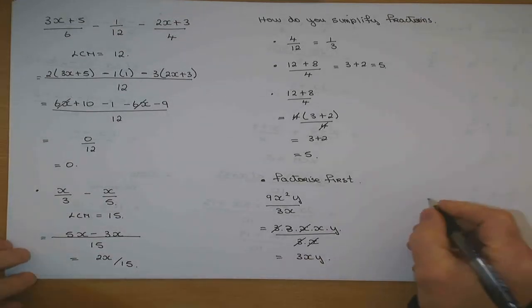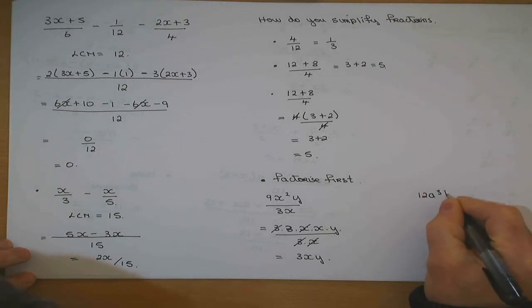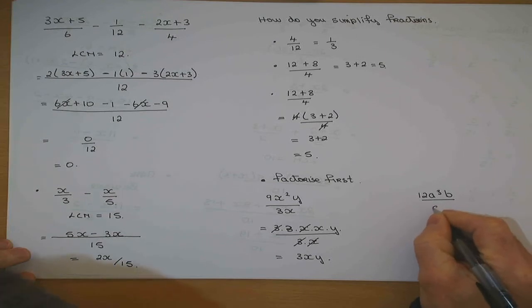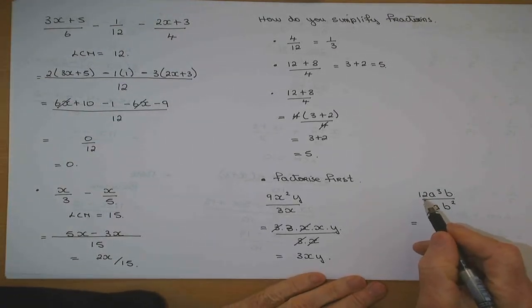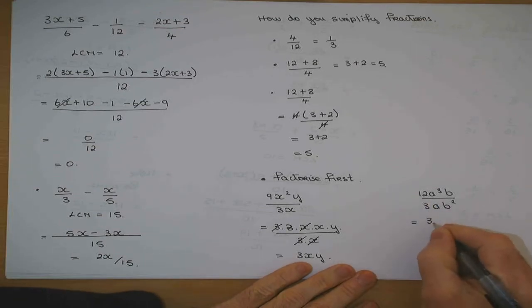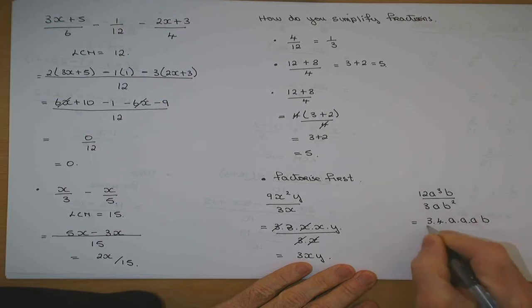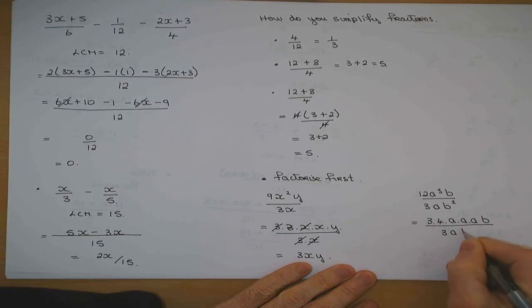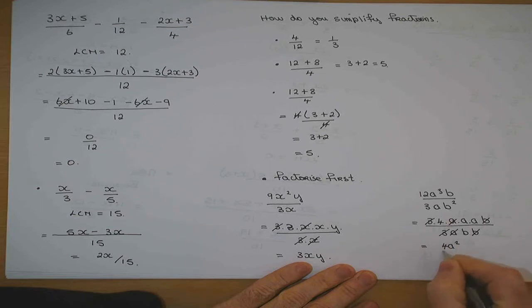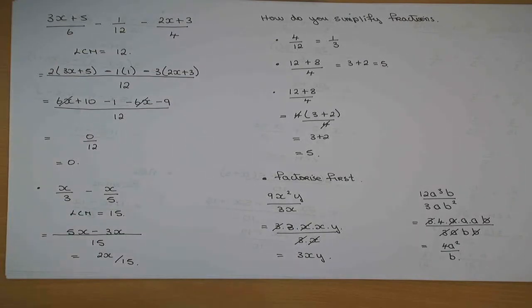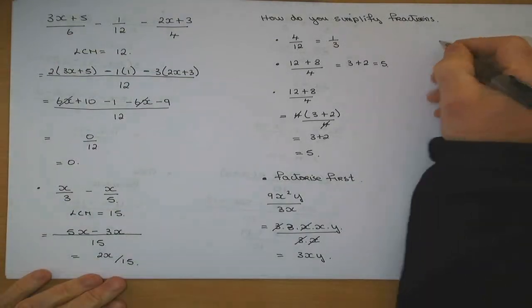Very good. If I had 12a cubed b over 3ab squared, factorize the 12, I could say it's 2 sixes, is that any good for me? What would I make it? 3 by 4 by a by a by a by b. Factorize the bottom, 3 by a by b. That 3 goes, that a goes, that b goes. What am I left with? The top, 4a squared. On the bottom, b. So what must you do with fractions first? You must factor, right?